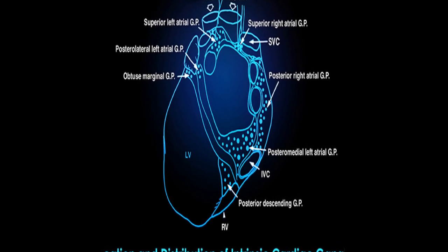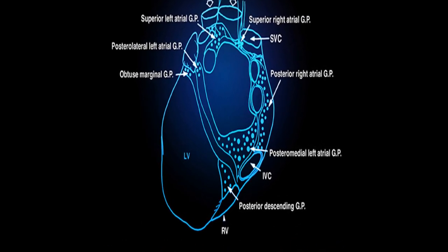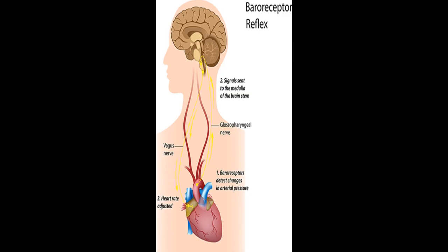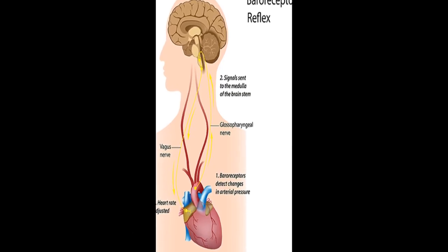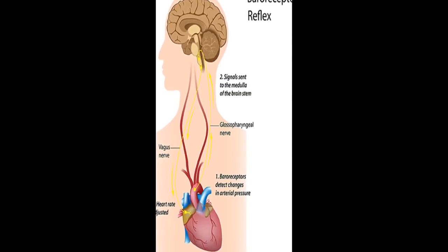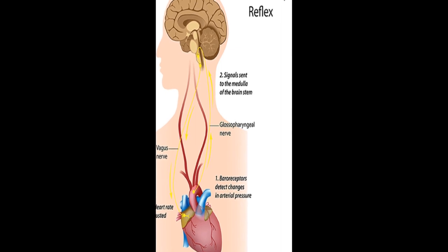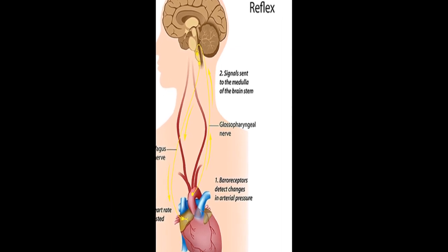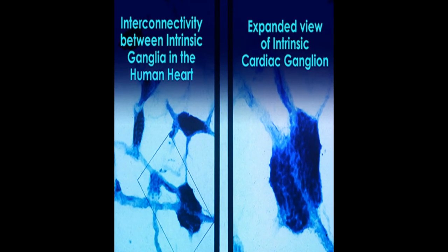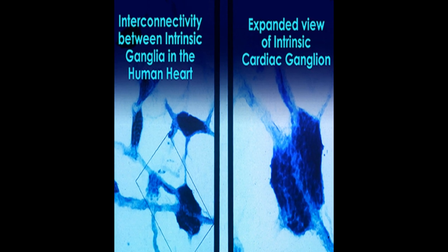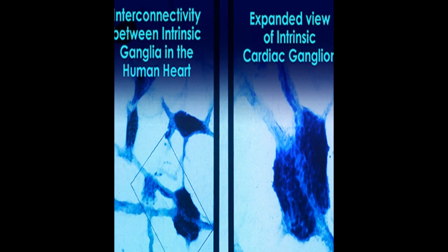This article provides an overview of neuroregulation of the heart and its basic anatomy, including the cardiac cycle and pacemakers. The cardiovascular regulation center in the medulla integrates sensory information and adjusts heart rate and blood pressure through sympathetic and parasympathetic pathways.